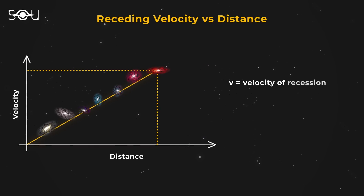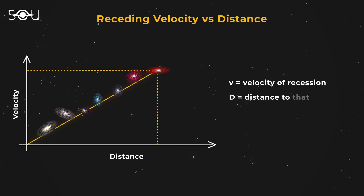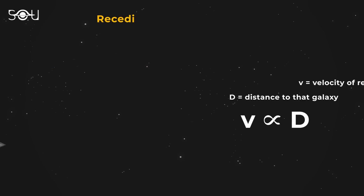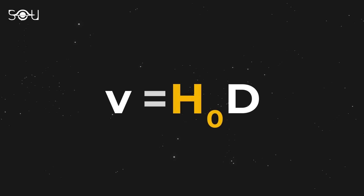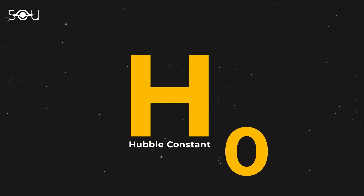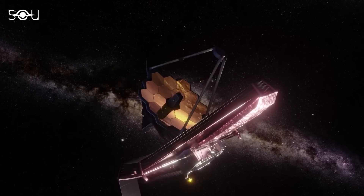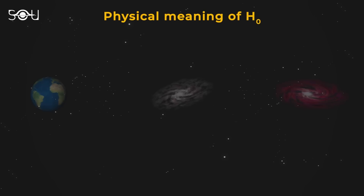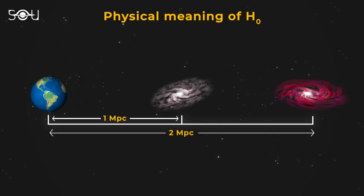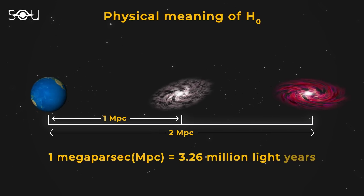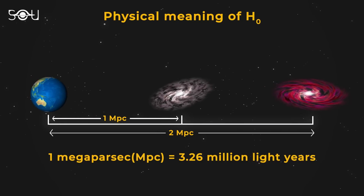So if V is the velocity at which a galaxy is receding and D is the distance to that galaxy, then V is directly proportional to D. This seemingly simple relation gave birth to the most controversial number in astronomy, the Hubble constant. This number is the key to understanding the recent discovery made by the James Webb Space Telescope. The physical meaning of the Hubble constant is simple: it tells us how fast a galaxy is receding from us for every megaparsec it is away. A megaparsec is a unit of distance equal to approximately 3.26 million light-years. Let me explain with a simple example. Imagine there are two galaxies — Galaxy A is one megaparsec away from us.